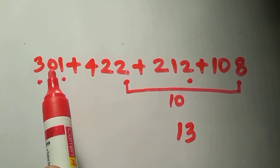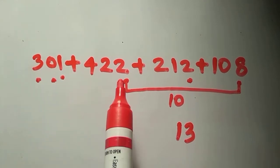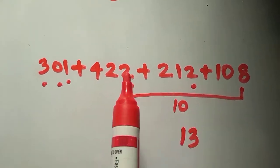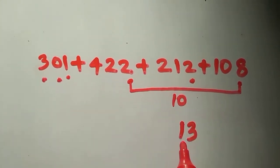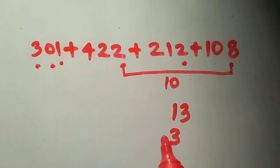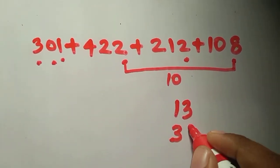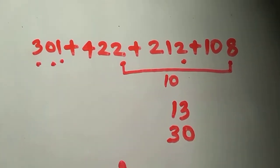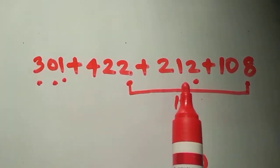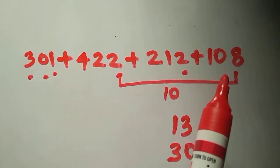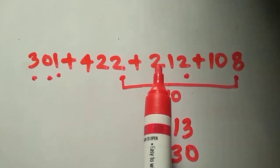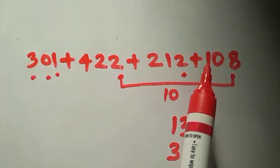We write 13 here. Then we move to the 10's digits. There's no 10's digit for the first number. Here it is 2 and here it is 1, so 2 plus 1 is 3. Since this is the sum of all 10's digits, we add one more zero, making it 30. Then for the 100's digits, there are no complements, so we just add: 3 plus 4 is 7, plus 2 is 9, plus 1 is 10.